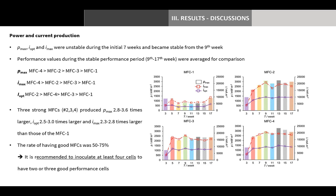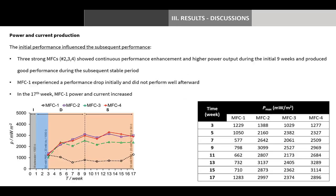The rate of having good MFCs was 50 to 75%. Therefore, to obtain experimental reproducibility, it is recommended to inoculate at least four cells to have two or three good performance cells. This data showed that initial performance influenced subsequent performance. The three strong MFCs showed continuous performance enhancement and higher power output during the initial nine weeks and produced good performance during the subsequent stable period. However, MFC1 experienced a performance drop initially and did not perform well afterward.